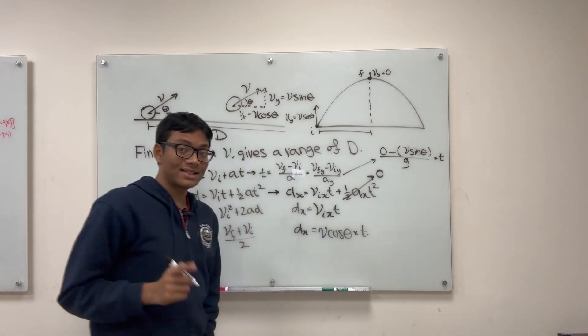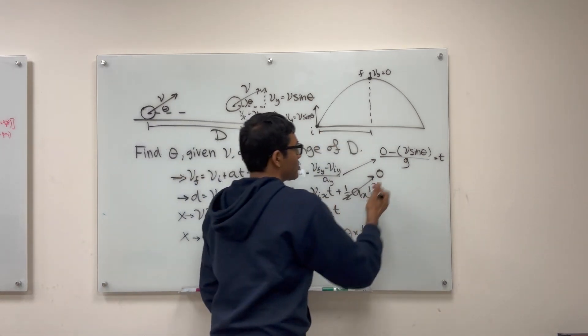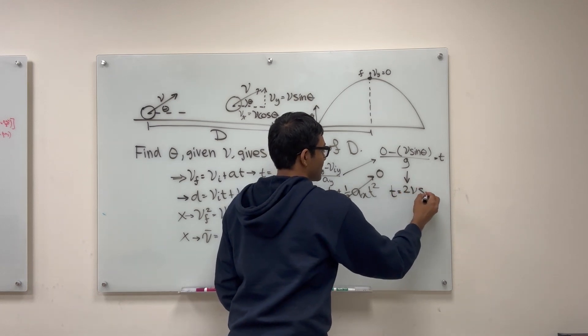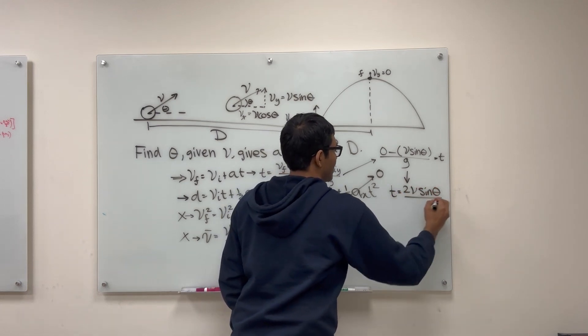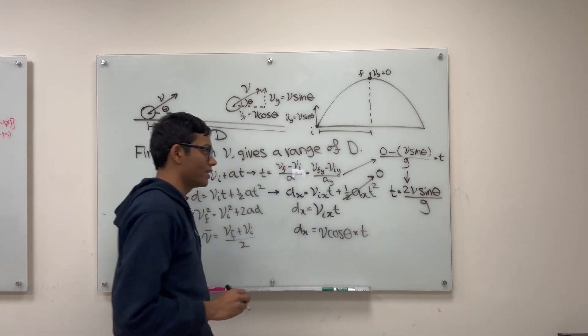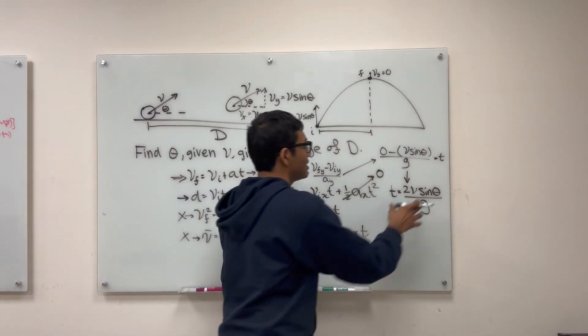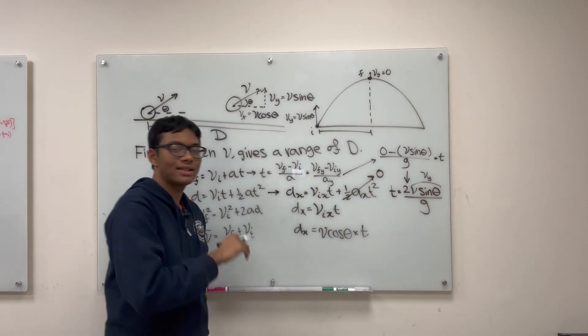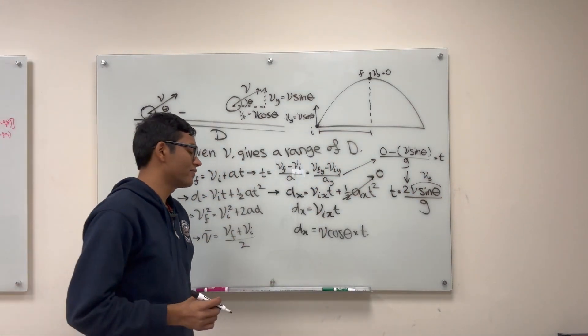This is the airtime for half of the ball's trajectory. So now to get the full airtime t, we just need to double this. So we get 2 v sine theta over g. So you can see that the airtime is completely determined by the y velocity, and we just have to double it to get the airtime for the full trajectory instead of the half trajectory.